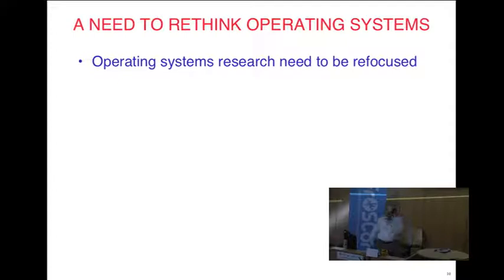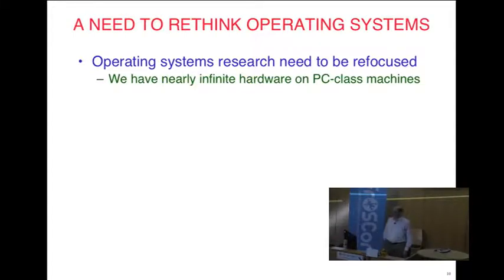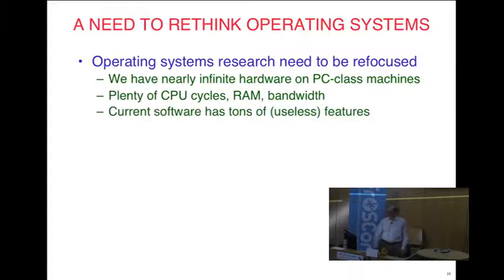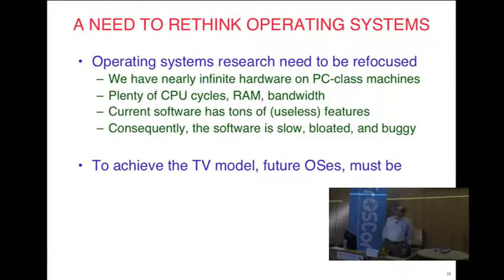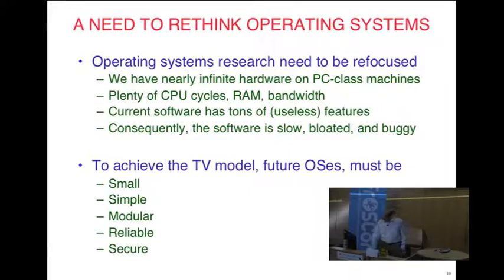Operating systems research needs to be refocused. We have basically infinite hardware on PC-class machines compared to 10 or 20 years ago — lots of CPU cycles, RAM, and bandwidth. Current software has tons of useless features due to the economics of the software business, where version 14 has to have more features than version 13. So software is slow, bloated, and buggy. Future operating systems need to be smaller, simpler, modular, more reliable, and secure. And self-healing — they have to detect their own errors and fix them on the fly.